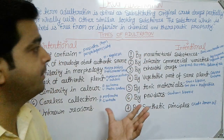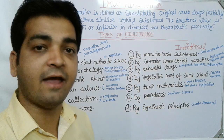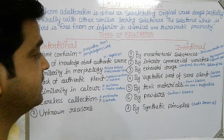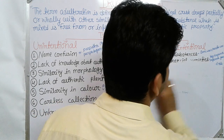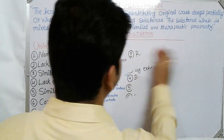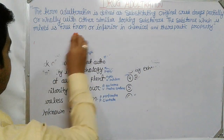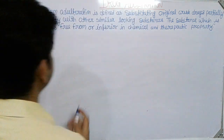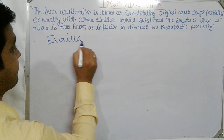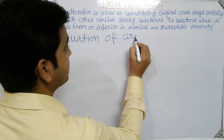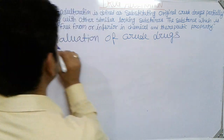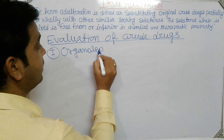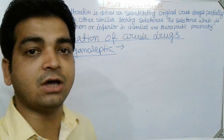To trace out adulteration, we need proper evaluation of crude drugs. When we go for evaluation there are five types. The first one is organoleptic evaluation of crude drugs. In this, we use sense organs like the eye, nose, tongue, and skin to evaluate crude drugs based on color, odor, taste, shape, and size. All crude drugs have their own specific color, odor, taste, and specific size and shape.